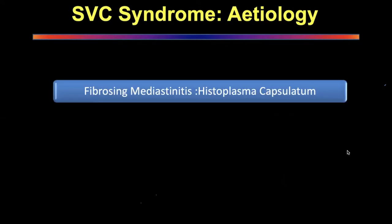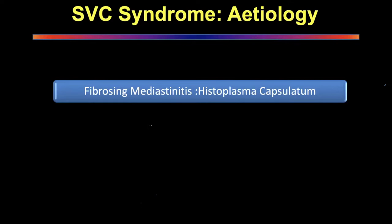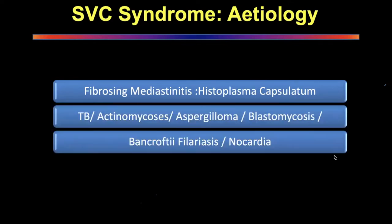Other etiologies include fibrosing mediastinitis, which I have seen causing SVC compression. It is a very difficult condition because there is no real treatment for the underlying cause — very often we don't even know what is causing it. There is some evidence that Histoplasma capsulatum predisposes patients to fibrosing mediastinitis, but treatment of SVC syndrome in this context is usually just stenting. Tuberculosis, actinomycosis, aspergilloma, blastomycosis can all cause SVC syndromes.